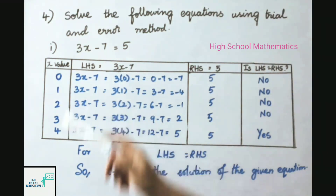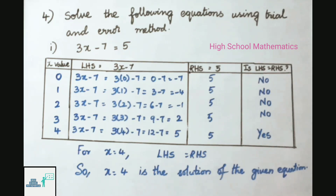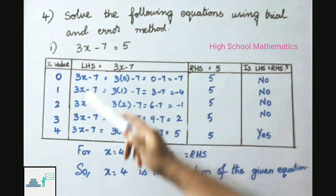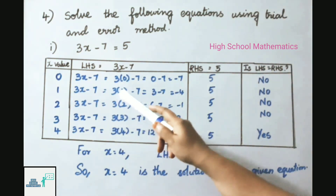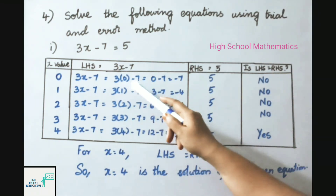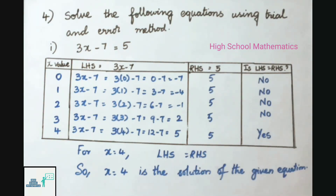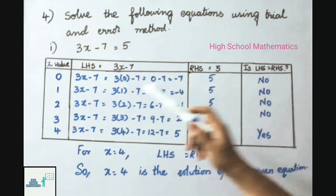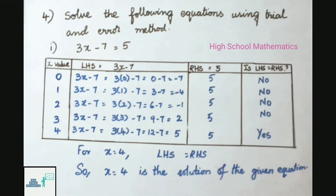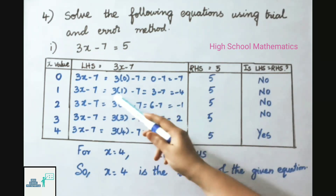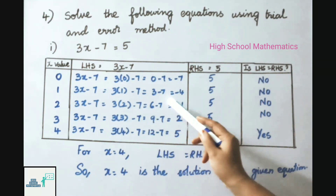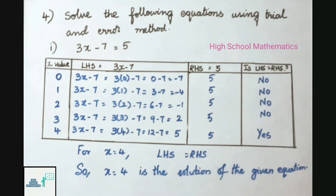For x = 0: LHS = 3(0) − 7 = −7; RHS = 5; not equal. For x = 1: LHS = 3(1) − 7 = 3 − 7 = −4; RHS = 5; not equal. For x = 2: LHS = 3(2) − 7 = 6 − 7 = −1; RHS = 5; not equal.